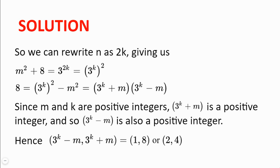Hence, 3 to the power of k minus m, 3 to the power of k plus m are both positive integers, and so both factors of 8, and so are equal to 1, 8, or 2, 4.